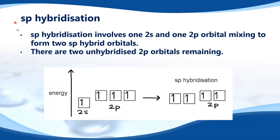SP hybridization involves one 2s and one 2p orbital mixing to form 2 sp hybrid orbitals. There are 2 unhybridized 2p orbitals remaining. Starting from the excited state of carbon, sp hybridization leaves us with 2 sp hybrid orbitals and 2 unhybridized 2p orbitals.